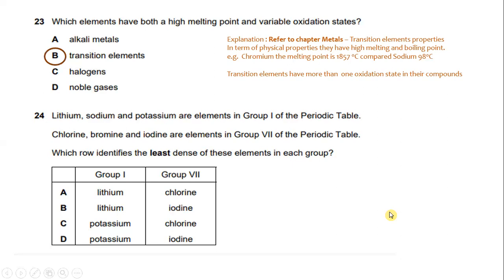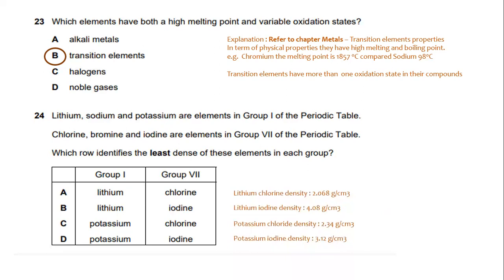Lithium, sodium and potassium are Group 1 elements of the periodic table. Chlorine, bromine and iodine are elements in Group 7 of the periodic table. Which rule identifies the least dense element in each group? Lithium chloride density is about 2.068 g/cm³, lithium iodide density is about 4.08 g/cm³, potassium chloride density is about 2.34 g/cm³, and potassium iodide about 3.12 g/cm³. The answer is A.